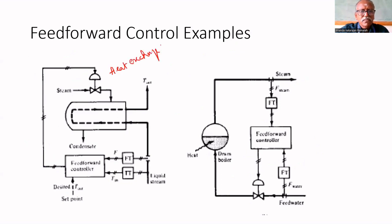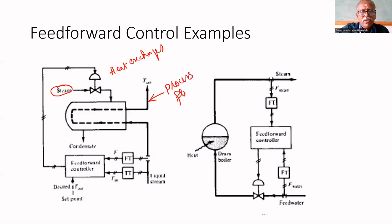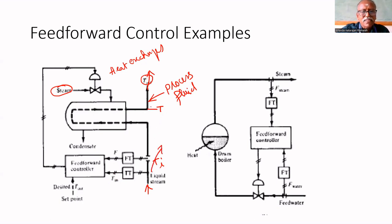Consider a heat exchanger example. Steam is used to heat a process fluid that enters on one side and leaves on the other. We have to maintain the outlet temperature T_out constant. The disturbances that may enter are: the inlet temperature of the feed — if it increases at constant steam flow rate, T_out will increase, so we must decrease the steam flow rate.